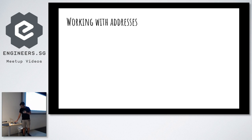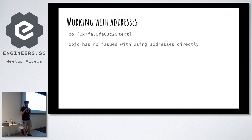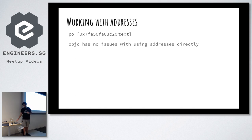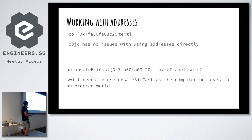One more thing before the demo: working with addresses. In LLDB, if you find an instance address and you know it's a label and want to find the text, in Objective-C you can use the address directly — Objective-C is flexible that way. But if you use Swift, this will not work. Swift will just treat this as a hex value and complain, because Swift is strongly typed. For Swift, you have to pass the address through `unsafeBitCast`, passing a type, and then it will create a label for you because the Swift compiler believes in a structured world, not the dynamic Wild West of Objective-C.